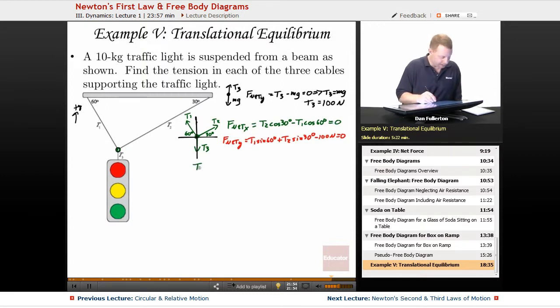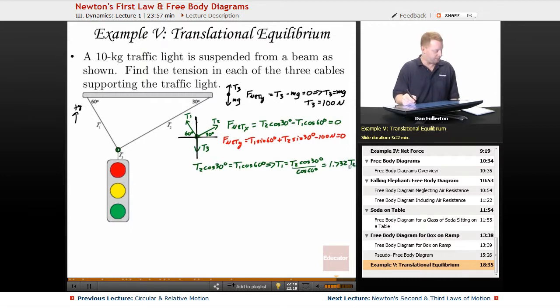I could write that T2 cos 30 degrees equals T1 cos 60 degrees, or T1 is going to be equal to T2 cos 30 degrees over cos 60 degrees, which is about 1.732 T2. So T1 is that factor times T2.